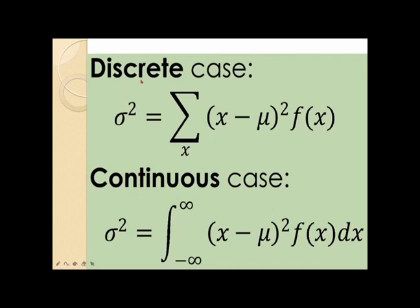If the random variable X is discrete, its variance can be calculated using this first formula: sigma squared is equal to the summation over X of (X minus mu) quantity squared times F of X. On the other hand, if X is continuous, the variance of X can be calculated using this second formula: sigma squared is equal to the integral from negative infinity to positive infinity of (X minus mu) quantity squared times F of X dx.